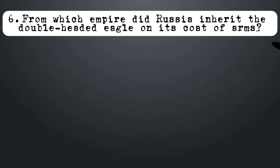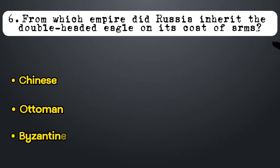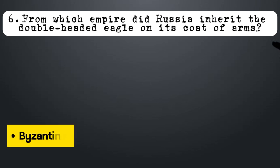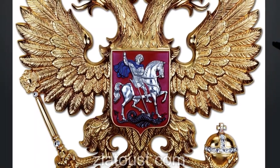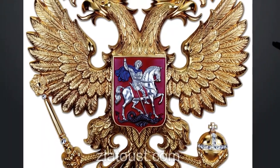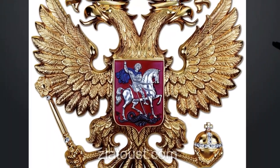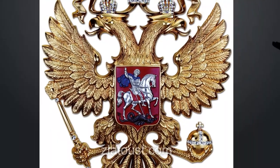From which empire did Russia inherit the double-headed eagle on its coat of arms? The modern coat of arms of the Russian Federation is an inheritance from the Roman Empire. Russia inherited the double-headed eagle from Byzantium.